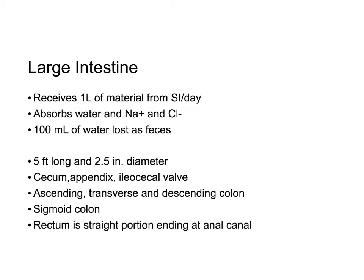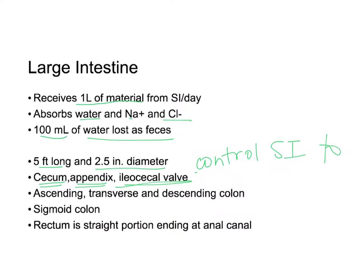The large intestines receive about a liter of material from the small intestines. Their main function is to absorb water, sodium, and chloride. About 100 milliliters of water is lost daily as feces. Although called the 'large' intestines, they're shorter than the small intestines but have a bigger diameter — about five feet long and two and a half inches in diameter. The ileocecal valve controls movement from the small intestines to the large intestines.